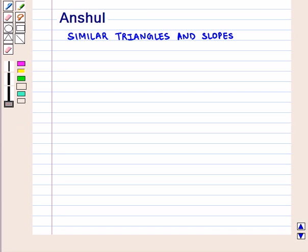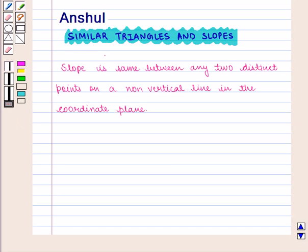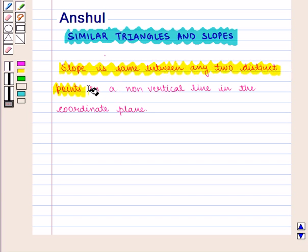Hello and welcome to the session. In this session we are going to discuss similar triangles and slopes. We will discuss with the help of similar triangles that slope is the same between any two distinct points on a non-vertical line in the coordinate plane.